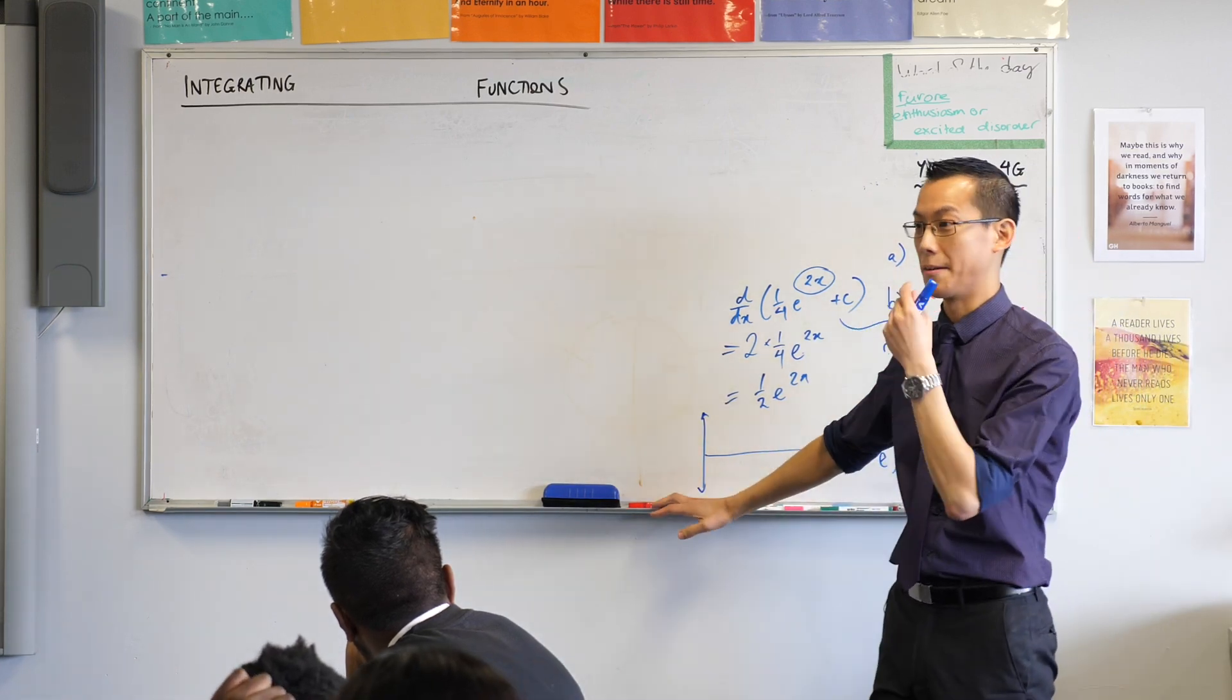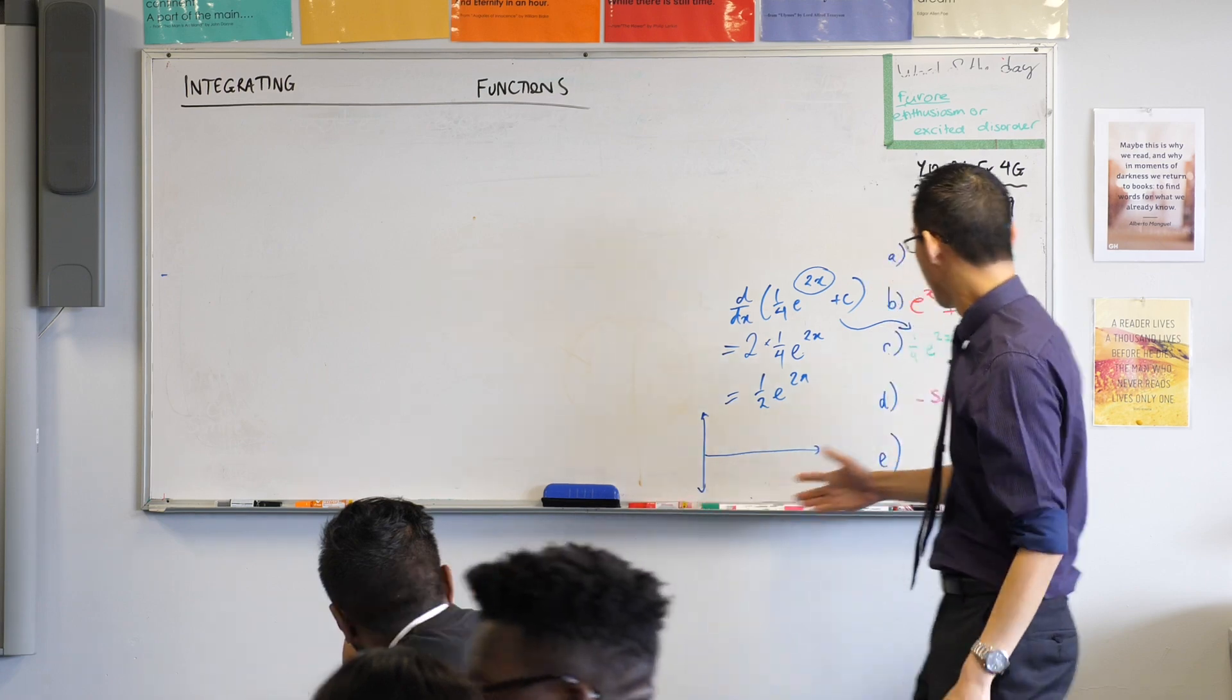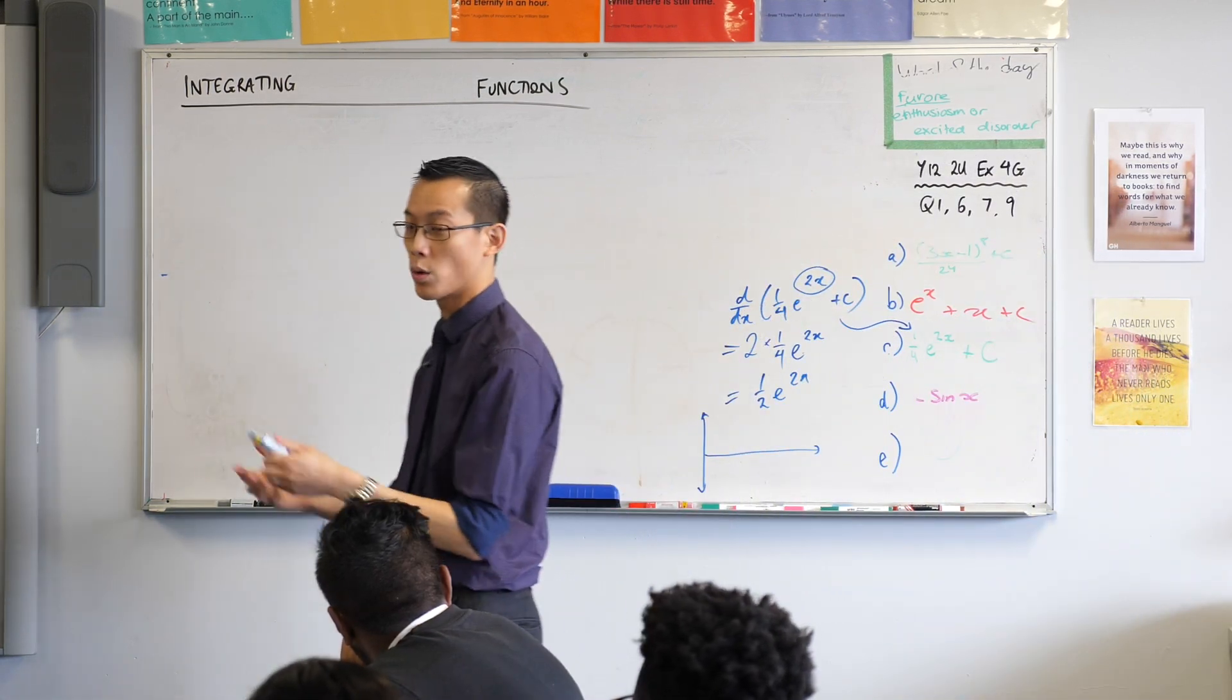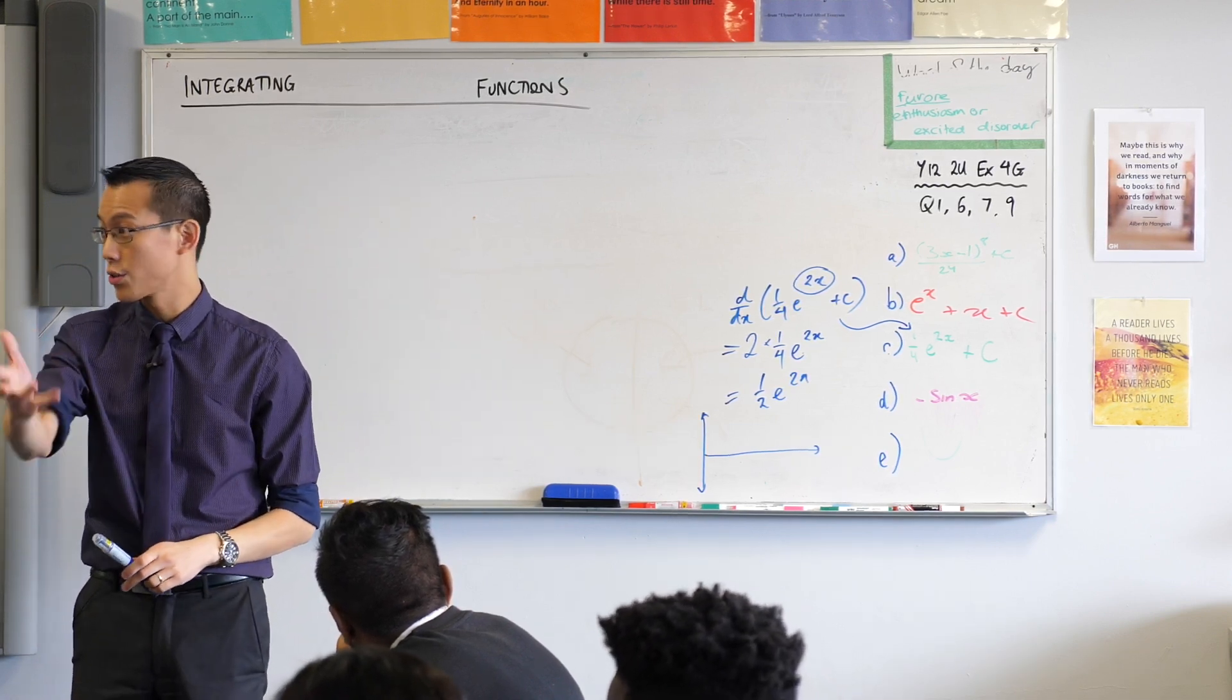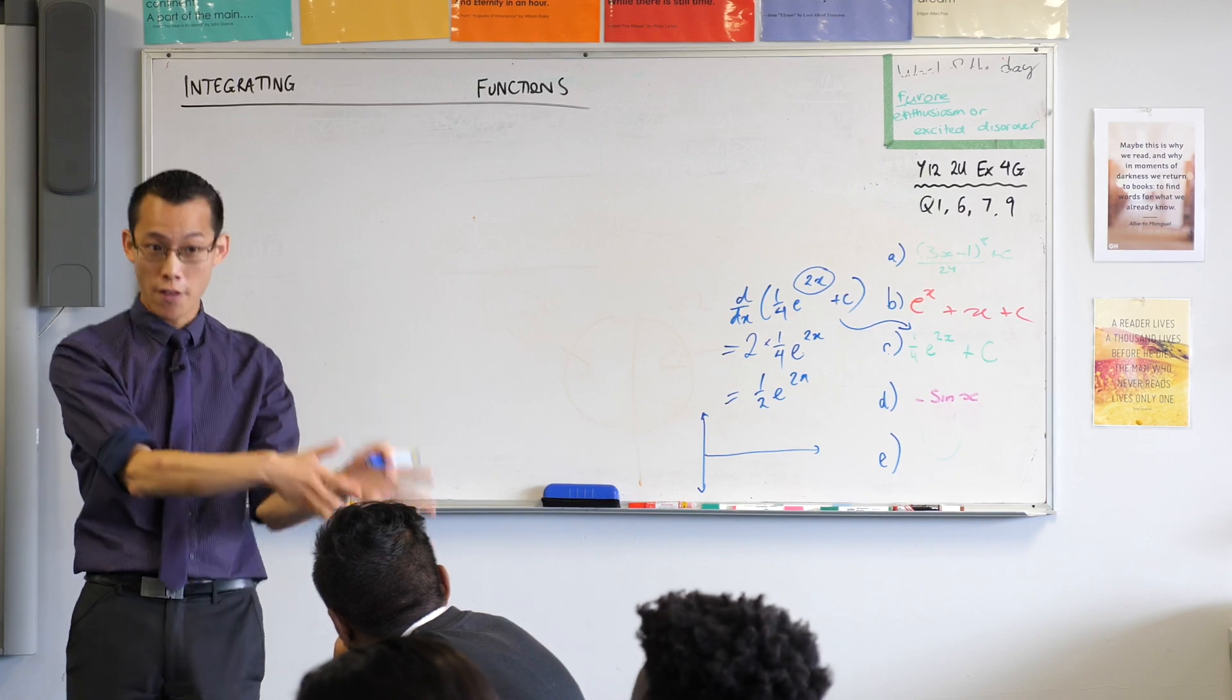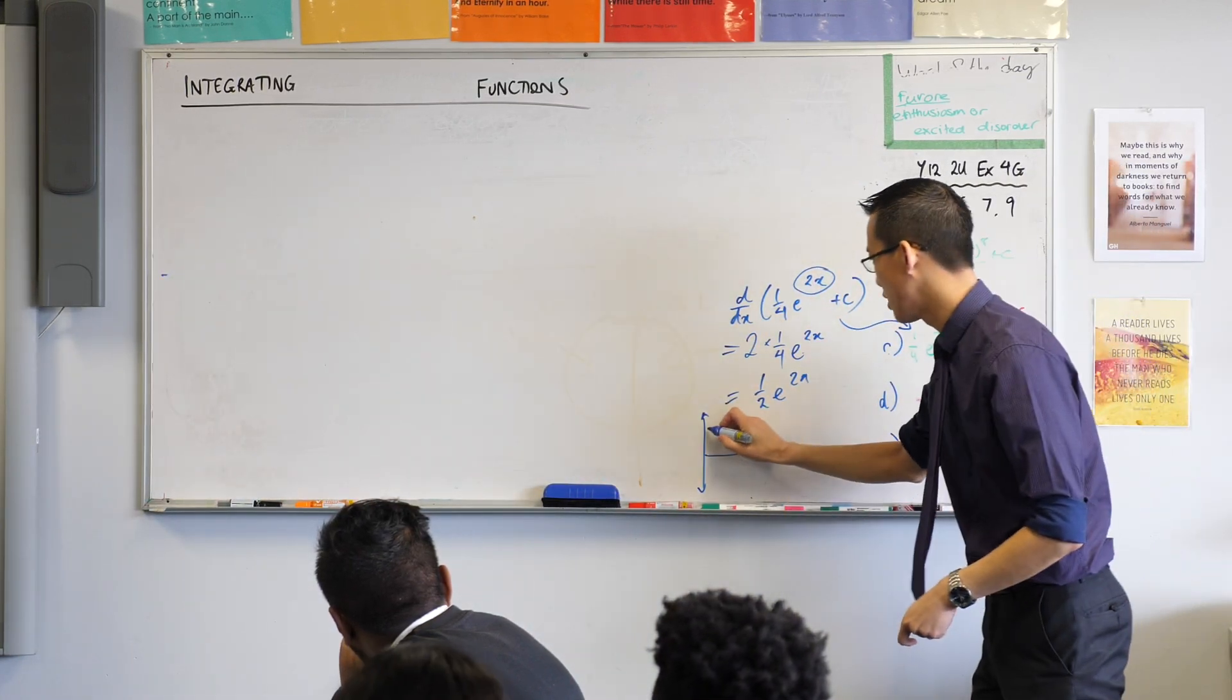Let me ask you this question again. When we started differentiation, we did first principles, all that kind of stuff. These derivatives, what do they tell you about a function? When you differentiate, what does that answer tell you about the function? The gradient, thank you. And that's what we call it, in fact, as well as the derivative, we call it the gradient function. So, think about what cos x actually looks like.